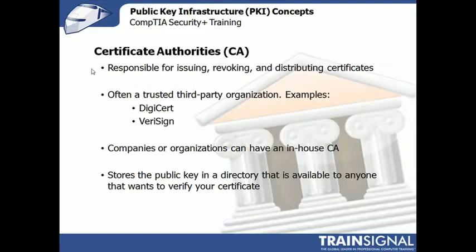A certificate authority is a server responsible for issuing, revoking, and distributing digital certificates. This is often a trusted third-party organization. Commercial examples are DigiCert and VeriSign. But companies and organizations can create their own in-house CA — for example, Windows Server products offer tools to create a local certificate authority. The CA also stores the public keys in a directory available to anyone who wants to verify your certificate.